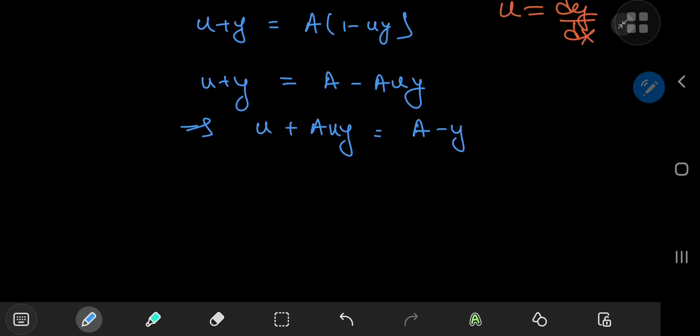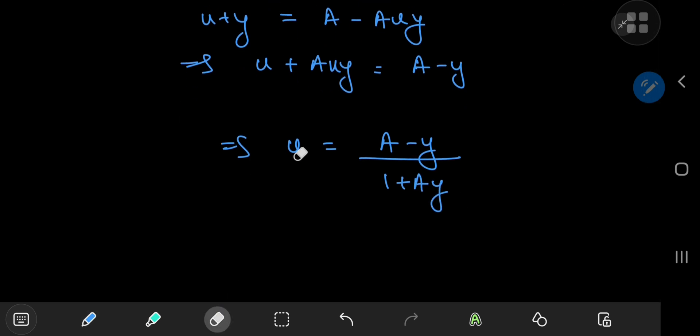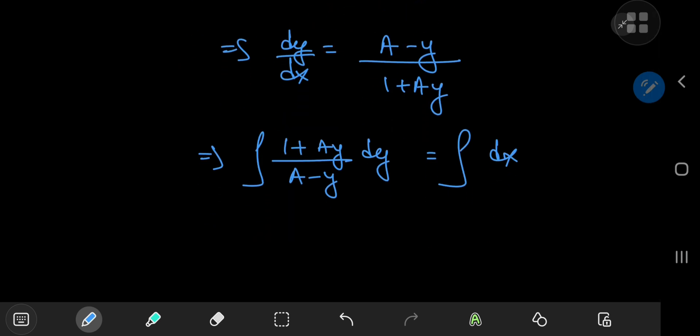Factoring out a u from the left-hand side gives me u equal to (a - y) divided by (1 + a times y). And remembering that the u variable was just dy by dx, I have another separable differential equation that's of course pretty easy to solve. So on the left-hand side, I have (1 + ay) divided by (a - y) dy equal to dx. So all I have to do now is integrate. And on the right-hand side, I have x + b.